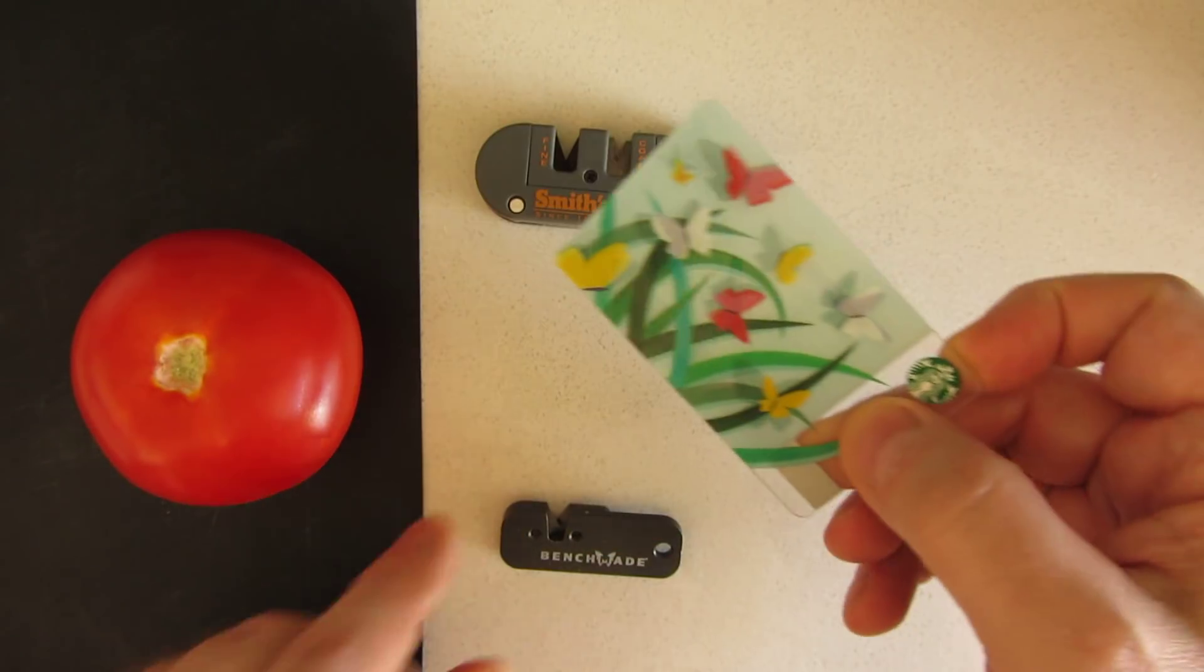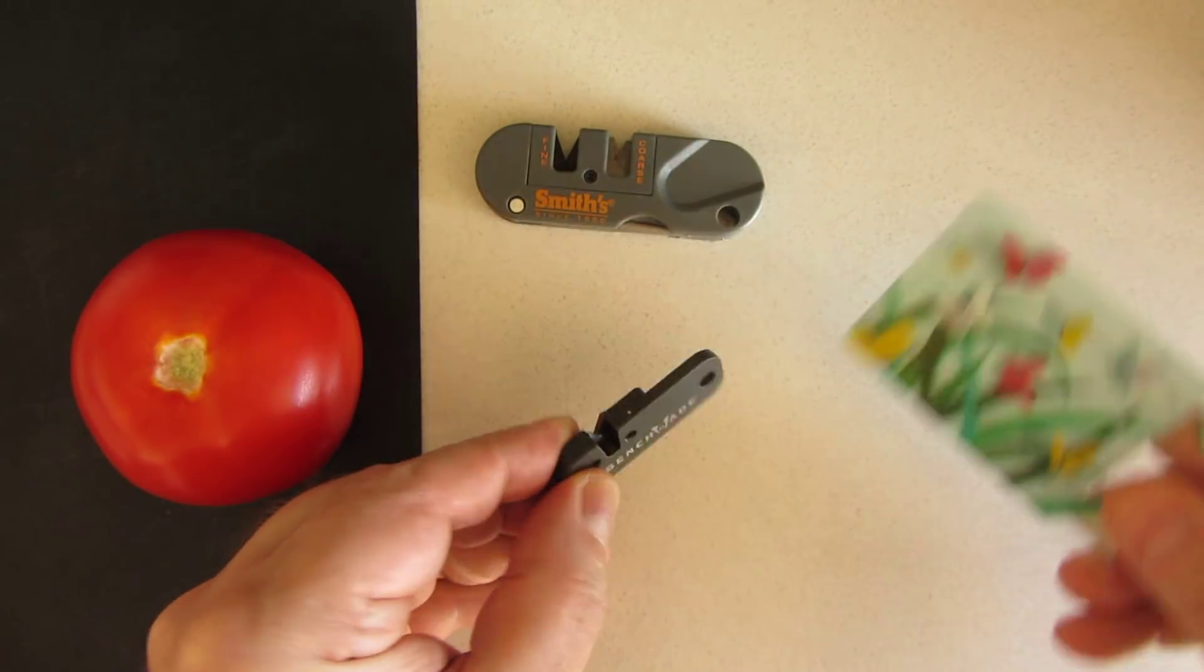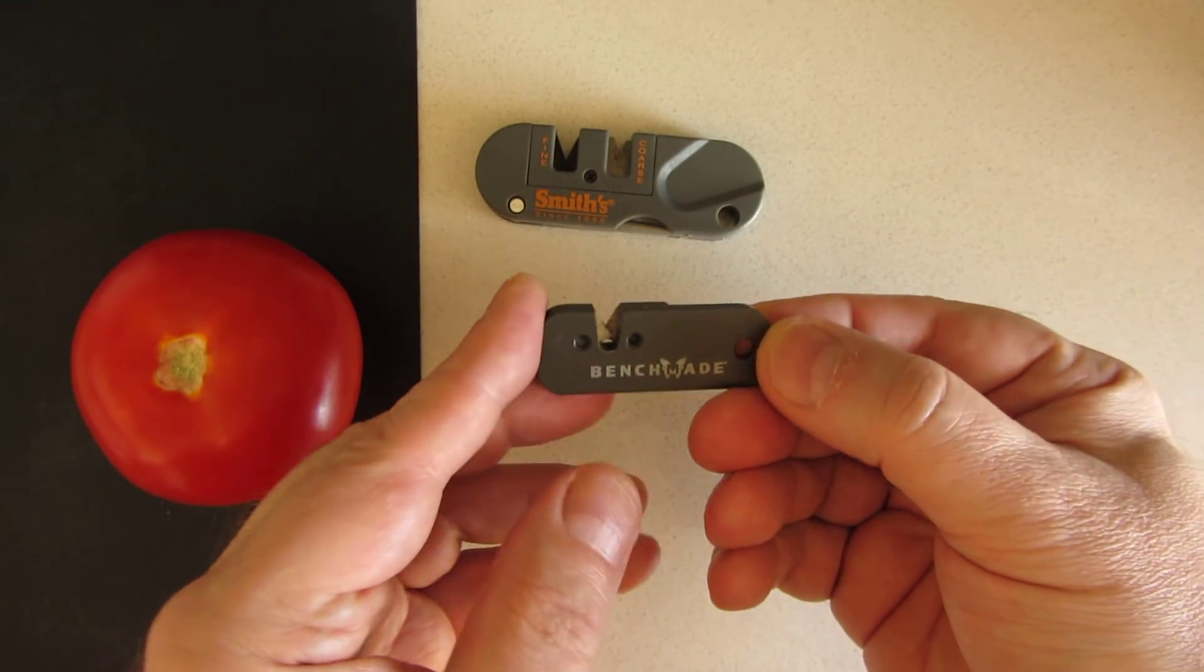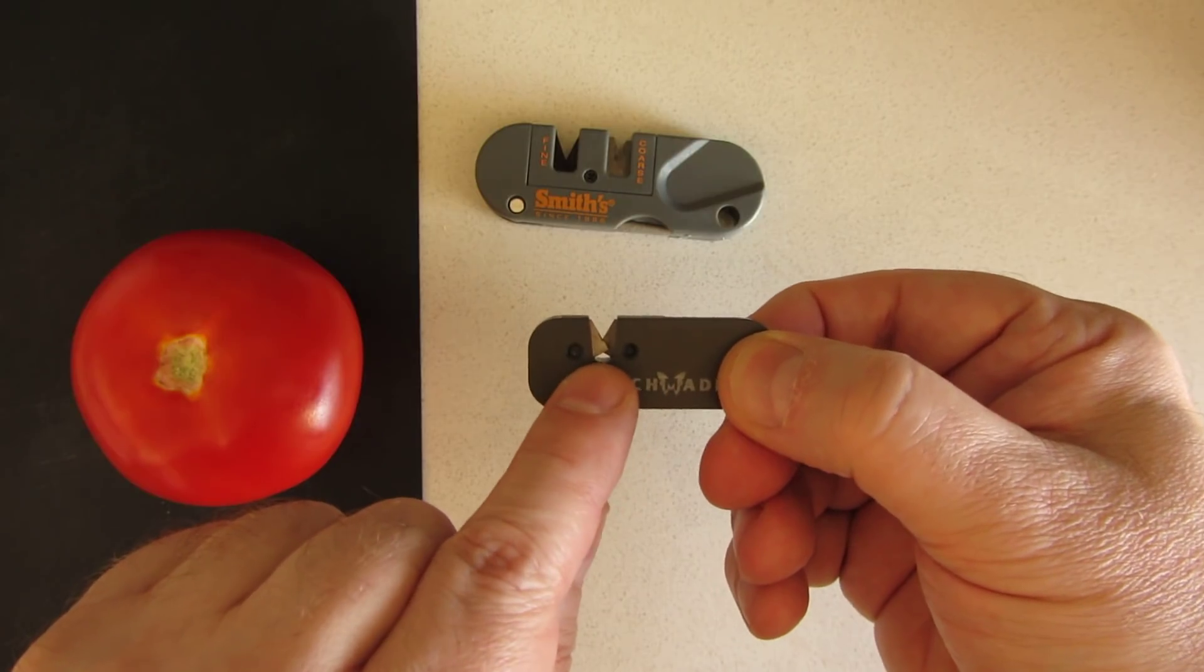It claims you can take a plastic credit card, sharpen it with a V-sharpener. Their product is called a Bavarian Edge. I'm going to use this Benchmade sharpener, sort of a V-slot sharpener.